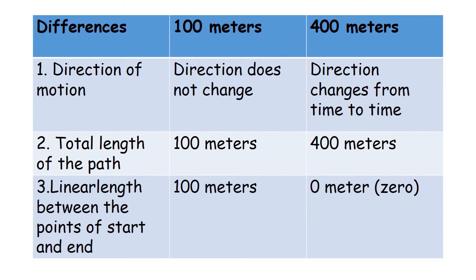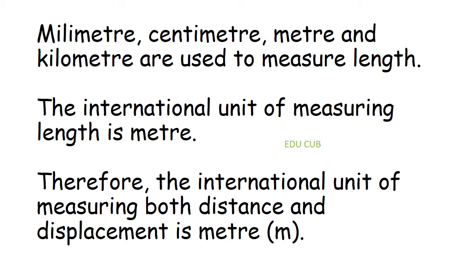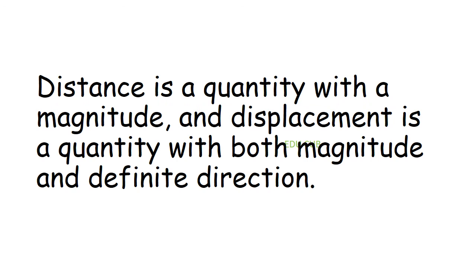Since both distance and displacement are lengths, their units are units of length: millimeter, centimeter, meter, and kilometer. The international unit of measuring length, distance, and displacement is the meter, represented by the symbol m. Distance is a quantity with magnitude only, and displacement is a quantity with both magnitude and a definite direction.